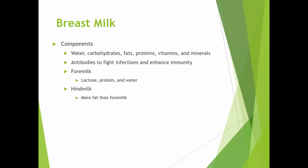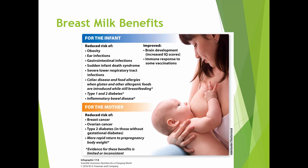Breast milk is made up of water, carbohydrates, fats, proteins, vitamins, and minerals, and it also contains antibodies that fight infections and enhance immunity. The milk can actually change in appearance when an infant is sick, as the body tries to enhance immunity. Hindmilk, which comes in later during a feeding, has more fat — a higher fat content than foremilk.